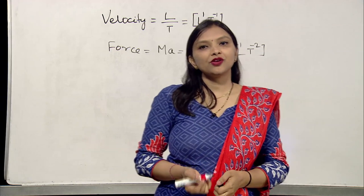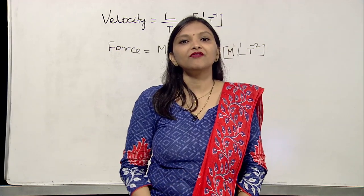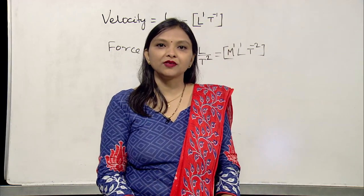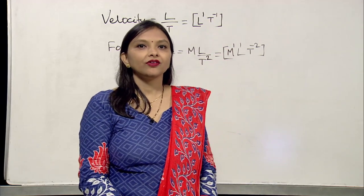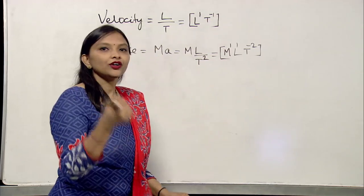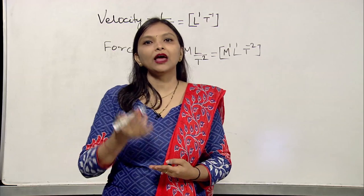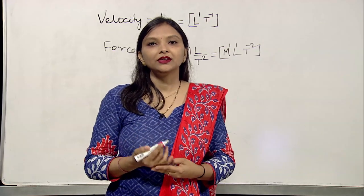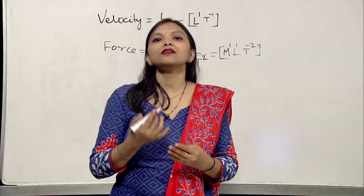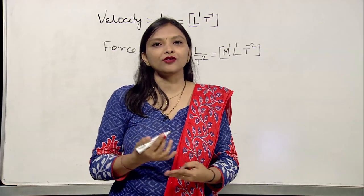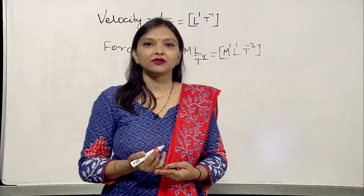Numbers associated with physical quantities have no significance in dimensional considerations. For example, here we have seen T equal to 2π root over L by G. Here 2π is a number or constant, so this has no dimension.